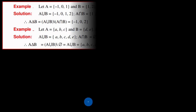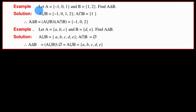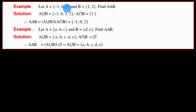Now let's look at some examples. Let set A be the set which contains one, zero, and let set B be the set which contains one and two. Find A delta B. So first find A union B: A union B equals {minus 1, 0, 1, 2}. And find A intersection B.